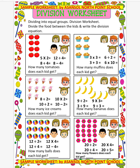So basically, division is the breaking of a number into an equal number of parts. For example, if we have a number such as 20 and we divide this number into equal parts, then we can call it division.